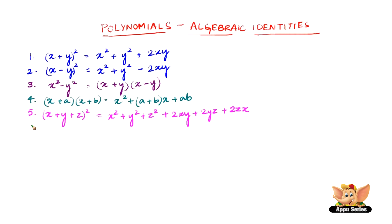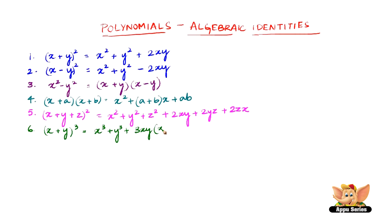Identity 6 is (x + y) whole cube, which equals x cube plus y cube plus 3xy into (x + y).